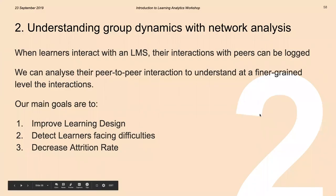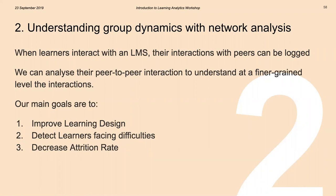Educational research shows that peer learning is actually very effective — it can improve the way things are explained and understood by other students. Thanks to learning analytics, we can also look further into that and see how students are related to each other and what kind of interactions they have, especially using a learning management system. We can track and log these interactions to gain insight into their relations and the network they are making. We can analyze this with the overarching goal of improving the way we design learning and learning activities, detecting learners who are facing difficulties, and trying to decrease the attrition rate.